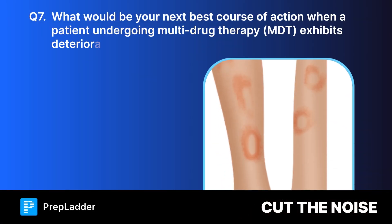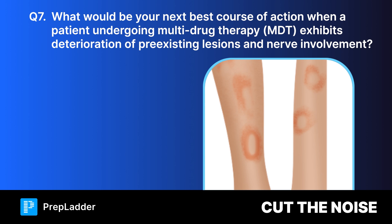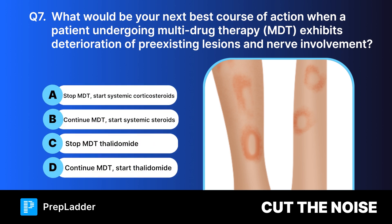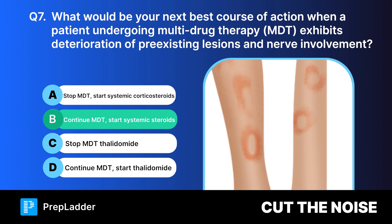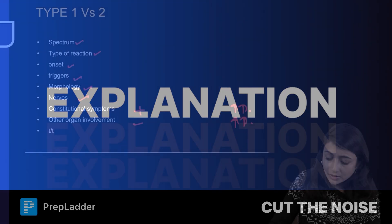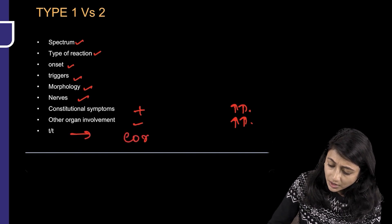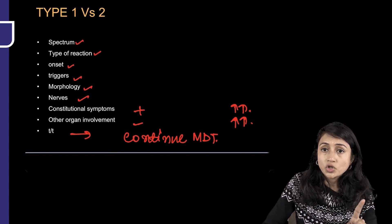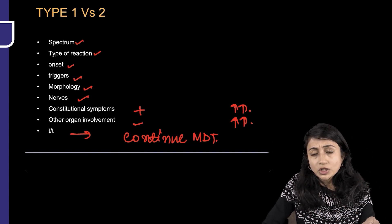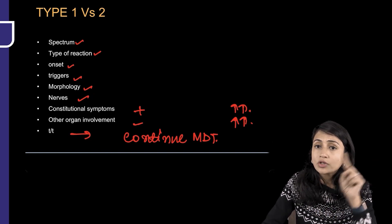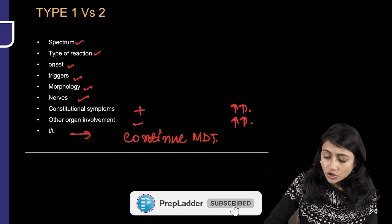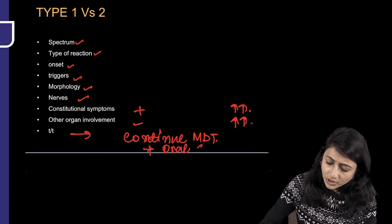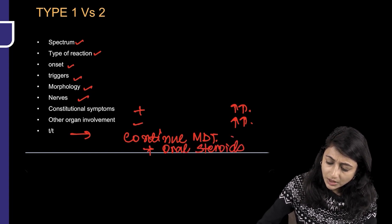Question 7: What would be your next best course of action when a patient undergoing multi-drug therapy (MDT) exhibits deterioration of pre-existing lesions and nerve involvement? The correct answer is continue MDT and start systemic steroids. You do not stop MDT — the reaction is due to CMI against killed bacilli — so you continue MDT plus give oral steroids.